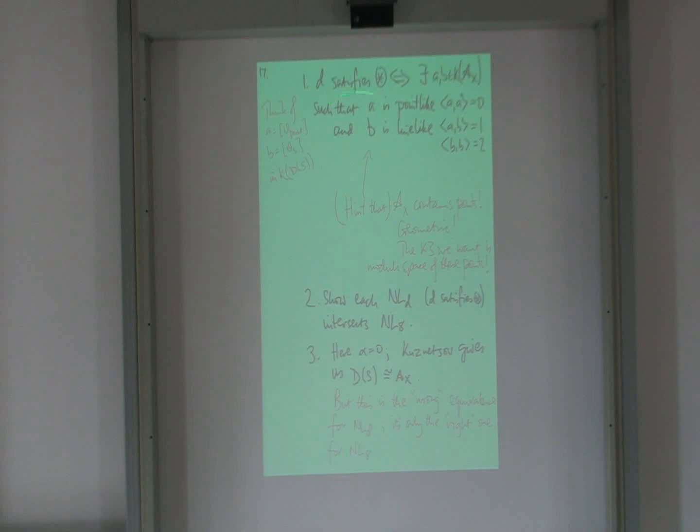So how do we do this? Oh my god, I've got five minutes left. So, what we do is we say, if you're on the list, that's some condition on the cohomology. We translate that into some condition on the K-theory. There's some hideous lattice numbers.